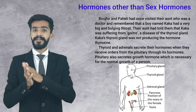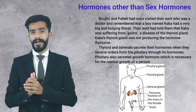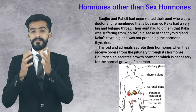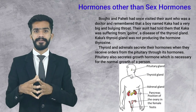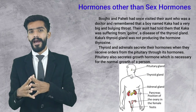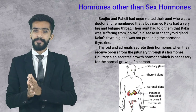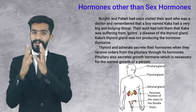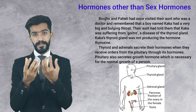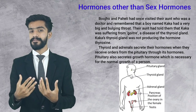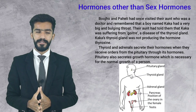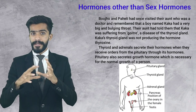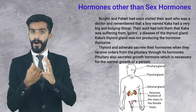Pahli and Abujo asked their aunt why Kaka had such a throat. Their aunt answered that Kaka is suffering from a disease called goiter. Kaka has goiter disease, and it is a disease of the thyroid gland — meaning the thyroid gland is the cause of this condition.